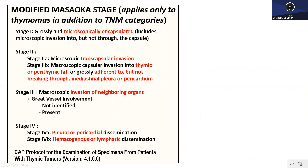This is the modified Masaoka-Koga staging system, which is advocated by the CAP protocol. However, the CAP protocol specifies that this staging should only be applied once a TNM designation has been given. So as per CAP, a TNM staging must be done first for thymic epithelial tumors. Stage 1 is encapsulated both grossly and microscopically with no transcapsular invasion. Stage 2a has microscopic transcapsular invasion; Stage 2b has invasion into thymic or perithymic fat, with possible adherence but no breach of mediastinal pleura or pericardium.